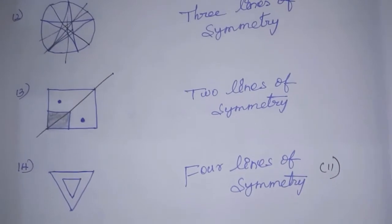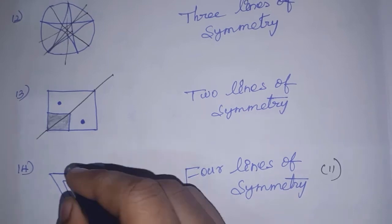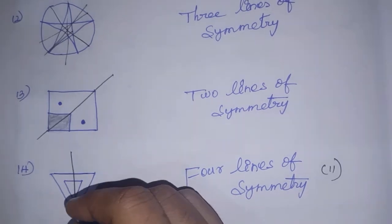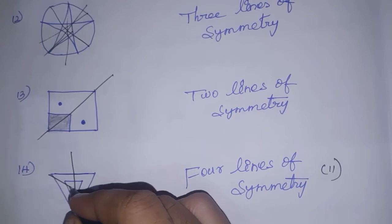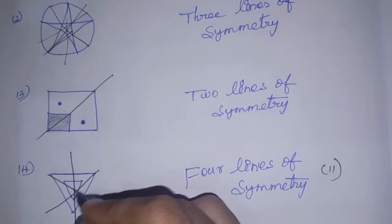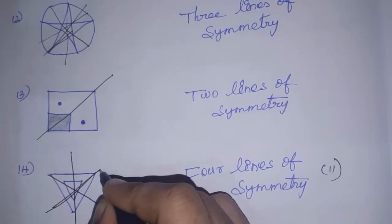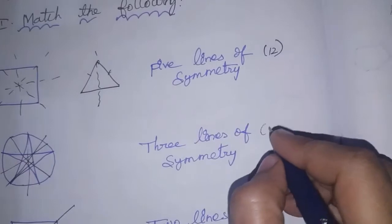Next, the fourteenth sum. In this diagram it is a triangle — an equilateral triangle. We can draw how many lines of symmetry? It has three lines of symmetry. That is the answer for the 14th sum.